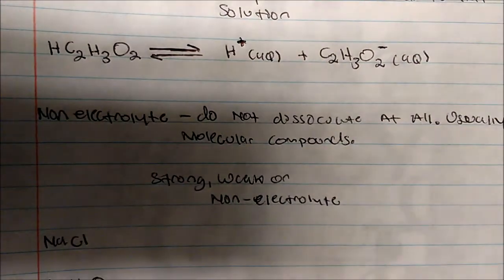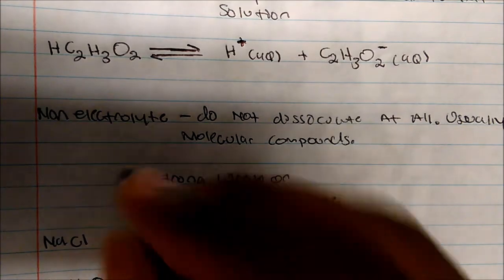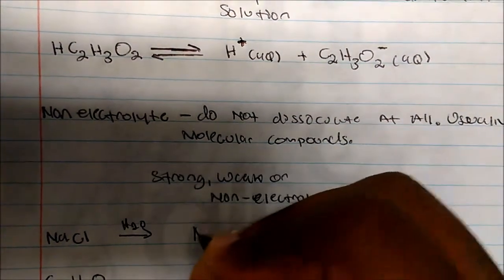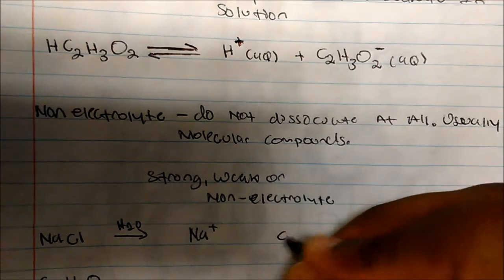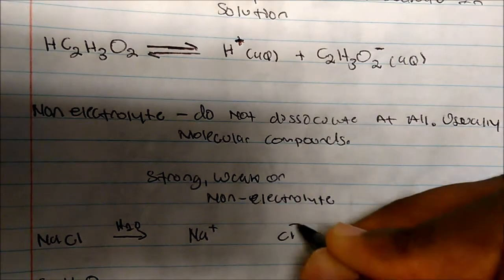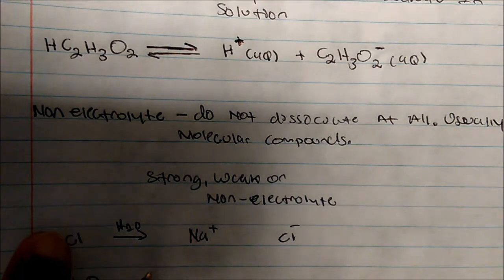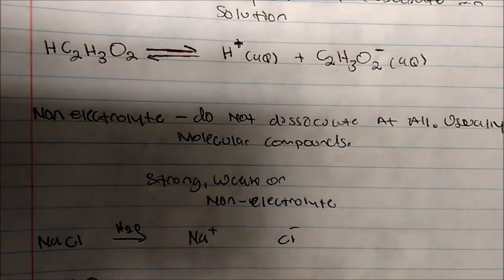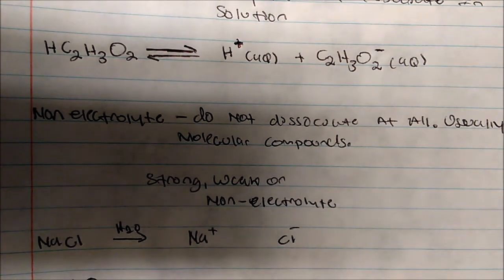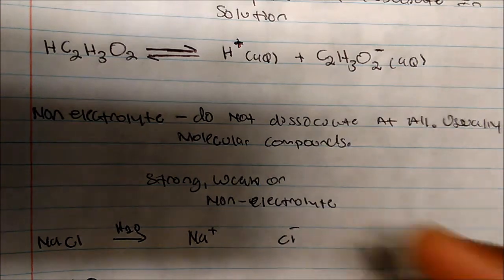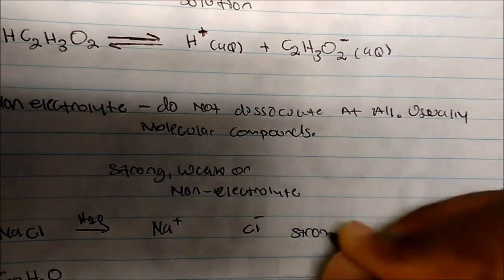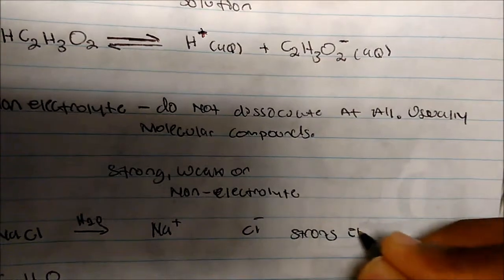Sodium chloride: if I throw this in water, I'll actually get sodium+ and chlorine−. Notice that this is an ionic compound — chlorine is a non-metal and sodium is a metal. So anytime you see ionic compounds, think strong electrolyte. This is actually a strong electrolyte.